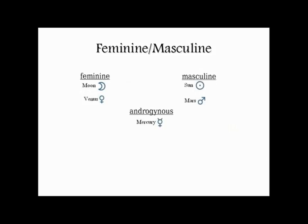Whereas Mercury — the planet usually associated with the word 'mind' — in Vedic astrology is called Buddha and represents buddhi, which is sometimes translated as discrimination and intellect as opposed to mind. So there's this analytical function that Mercury represents, which is not the same thing as the basic faculty of perception and mental awareness that the Moon represents.